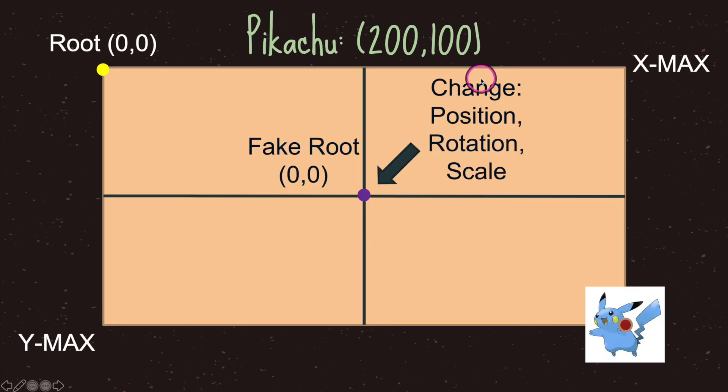Now if you must have the root node change position, rotation and scale the recommended way is to one have a root node but keep it again at zero zero because we never change it. However what you do is you create a fake root node that's a sub node of the root node and from the fake root node you put everything underneath it.